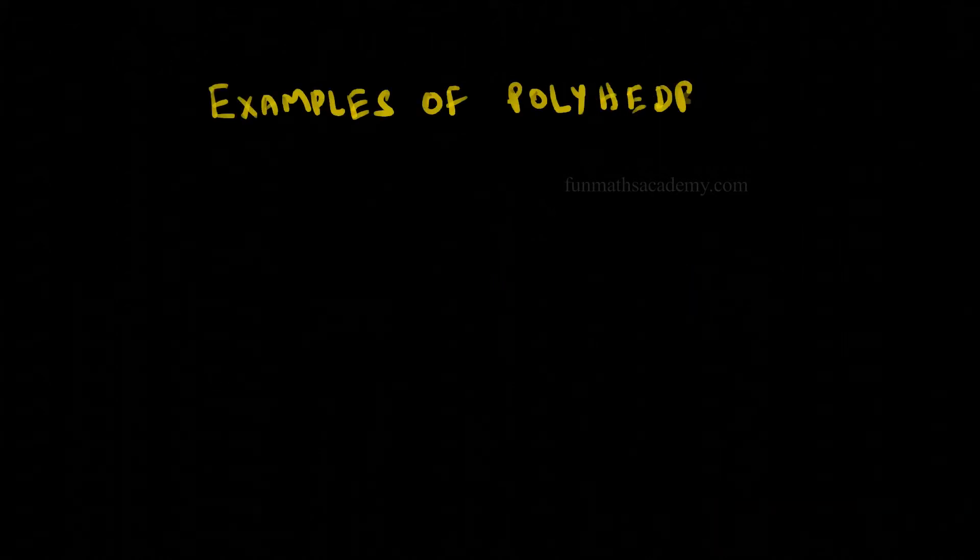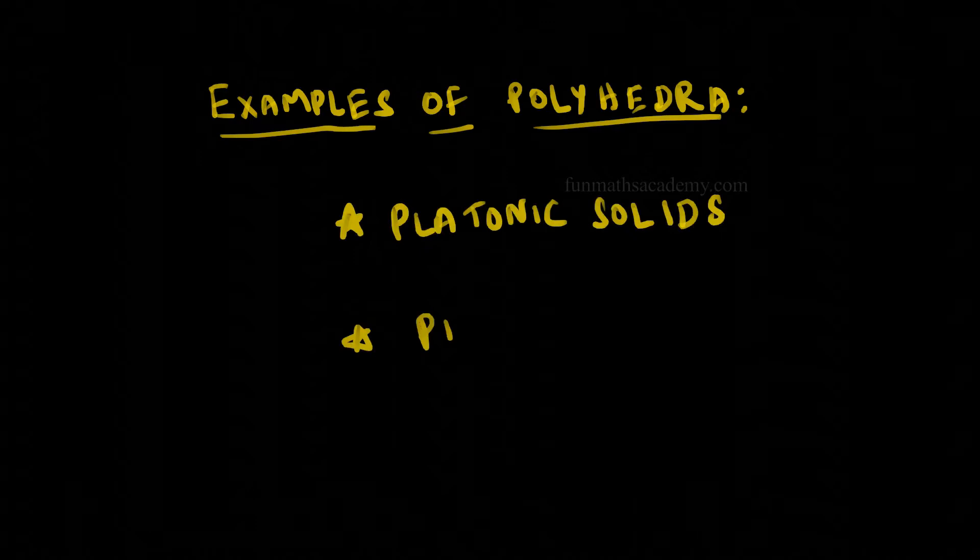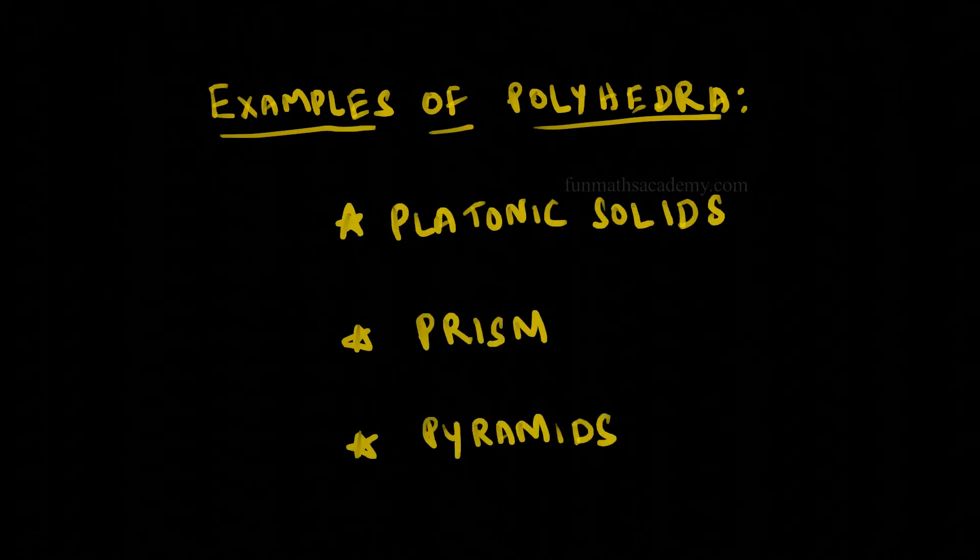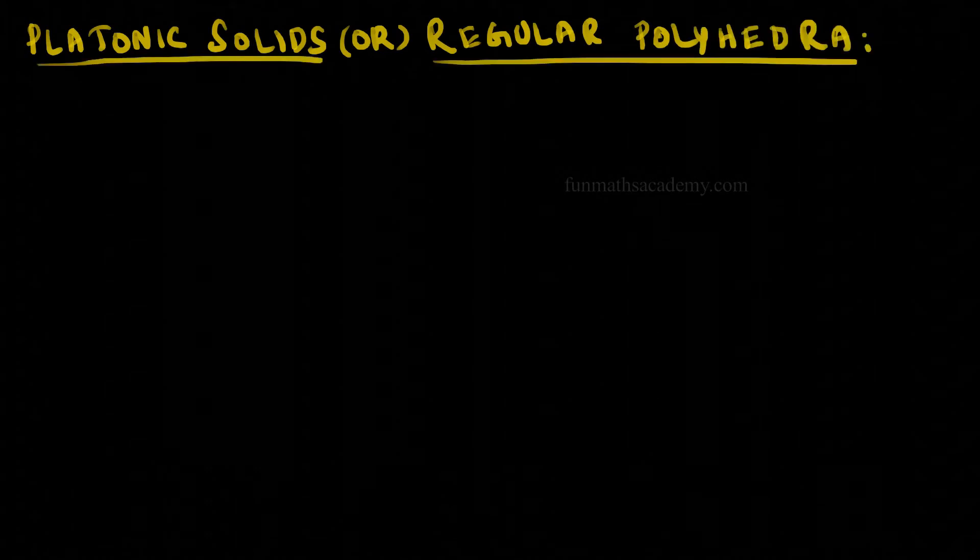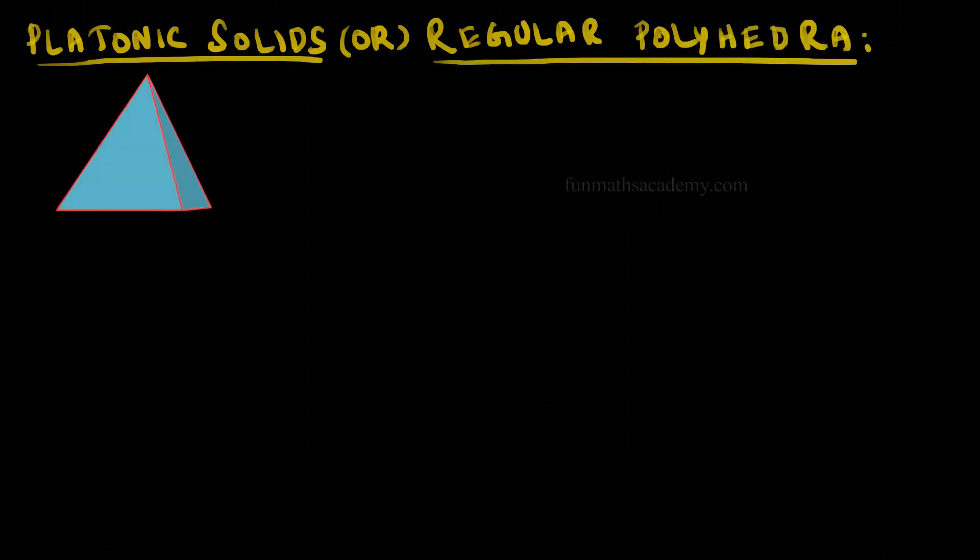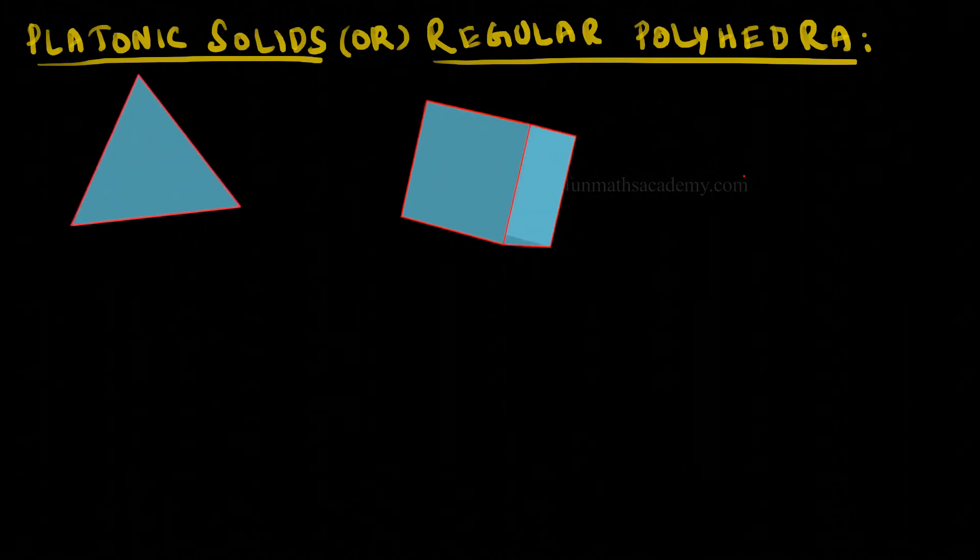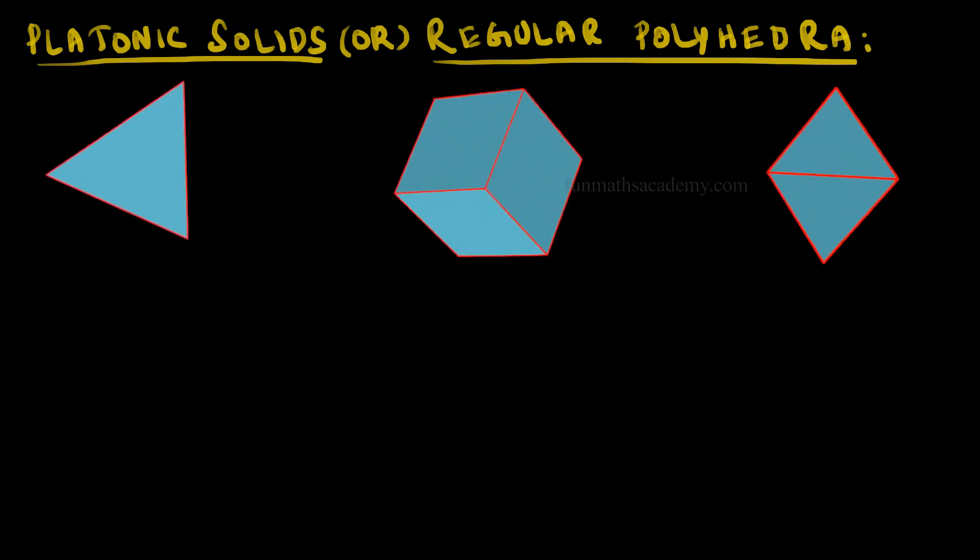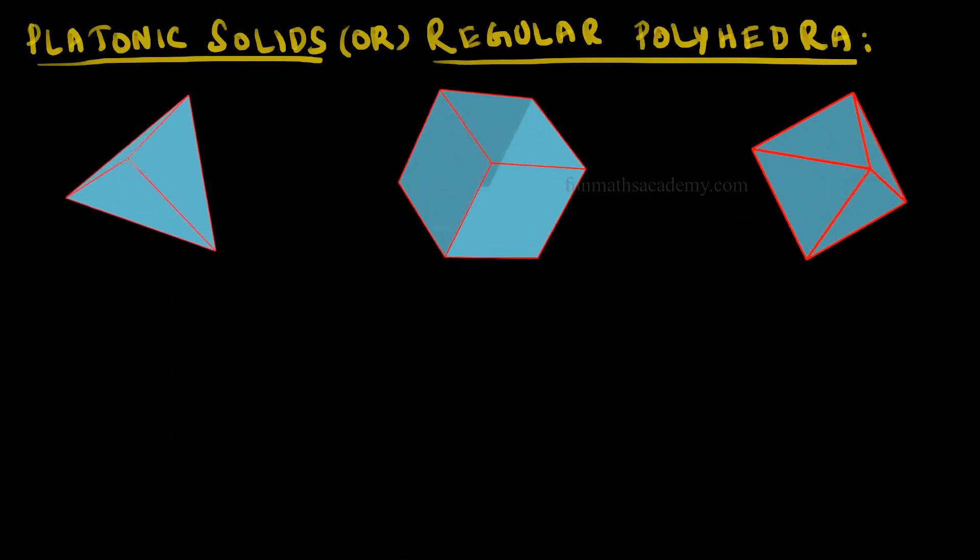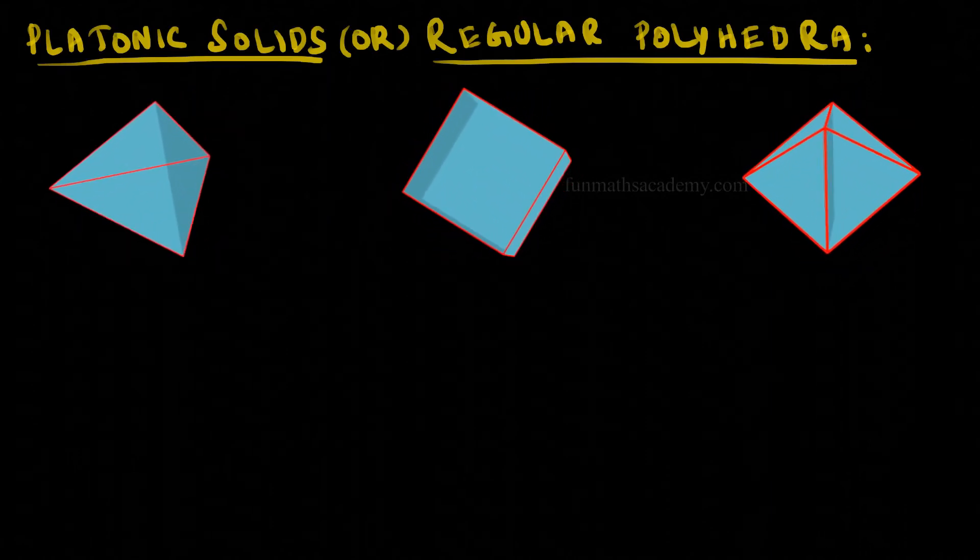Some examples of polyhedron are 3D shapes like platonic solids, prisms, and pyramids. Platonic solids are also called regular polyhedrons. We call a polygon with equal sides as a regular polygon, right? In the same way, a polyhedron made from a regular polygon will be called a regular polyhedron.